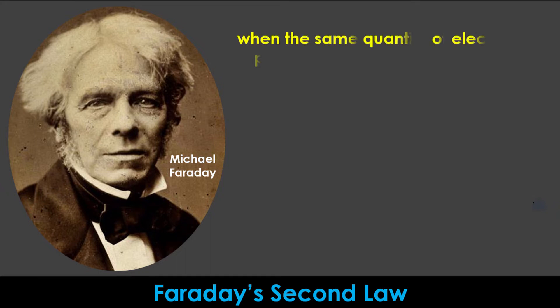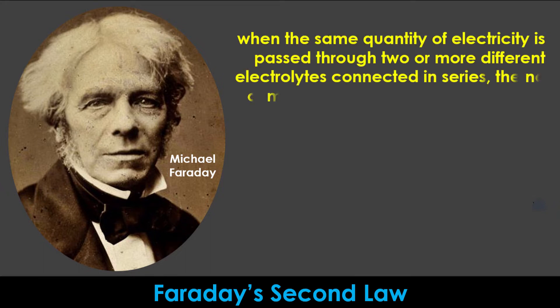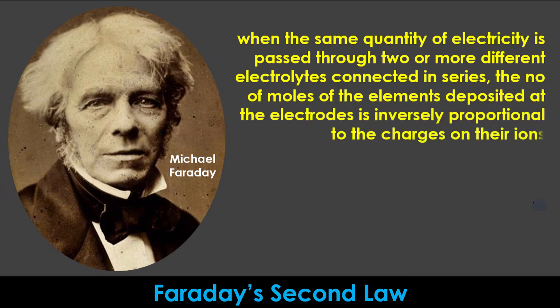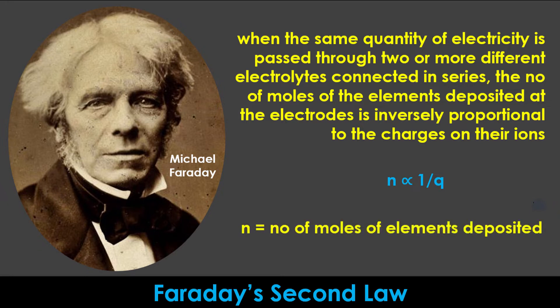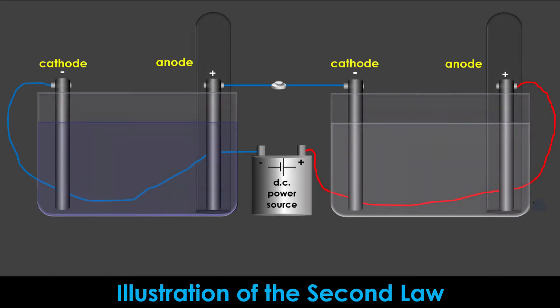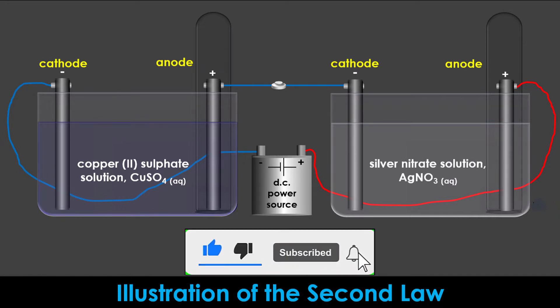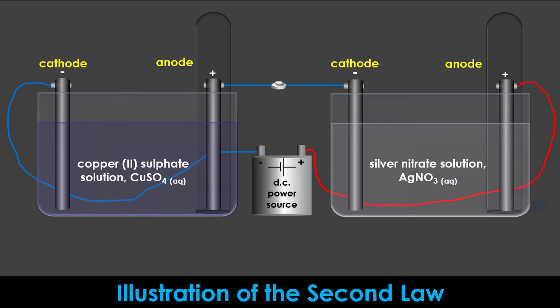Welcome back. Faraday's Second Law of Electrolysis states that when the same quantity of electricity is passed through two or more different electrolytes connected in series, the number of moles of the elements deposited at the electrodes is inversely proportional to the charges on their ions. Mathematically, I express this law as n inversely proportional to q, where n is the number of moles of elements deposited and q is the charge on their ions.